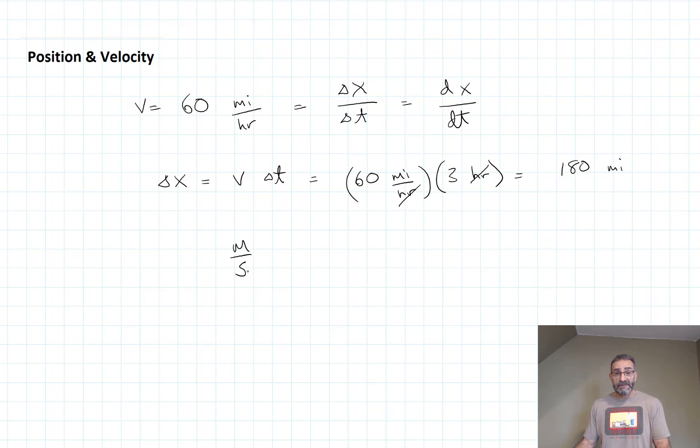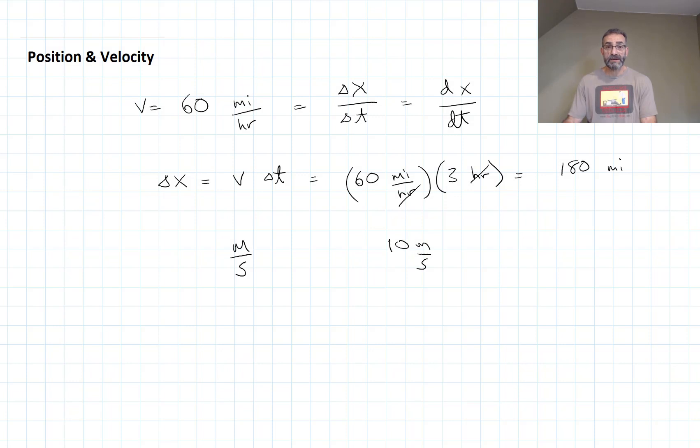The fastest people - we just had the Olympics last summer - can do 100 meters in about 10 seconds, less than 10 seconds. So for them to go 10 meters, it only takes one second. The fastest people are running at 10 meters per second. It turns out that one meter per second is approximately 2.2 miles per hour. That means the fastest people on earth are running about 10 meters per second, or about 22 miles per hour, just to give you some context.